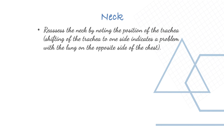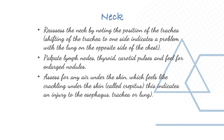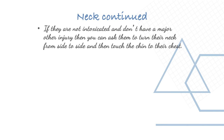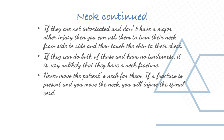For neck assessment, note the position of the trachea — shifting to one side indicates a problem with the lung on the opposite side. Palpate lymph nodes, thyroid, carotid pulse, and feel for enlarged nodules. Assess for air under the skin, which feels like crackling and is called crepitus — this indicates injury to the esophagus, trachea, or lung. If the patient is not intoxicated and has no major injury, ask them to turn their neck side to side and touch chin to chest; if they can do both without tenderness, a neck fracture is unlikely. Never move the patient's neck for them if a fracture is present.